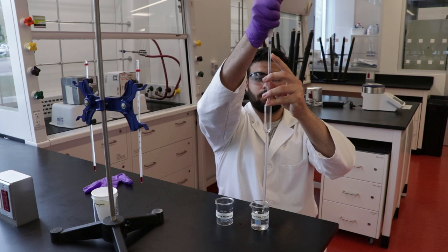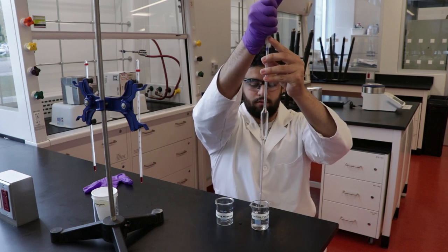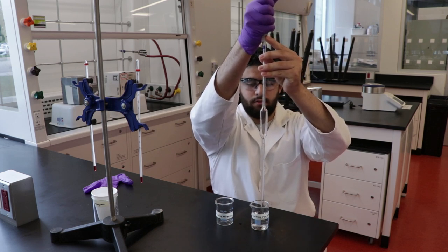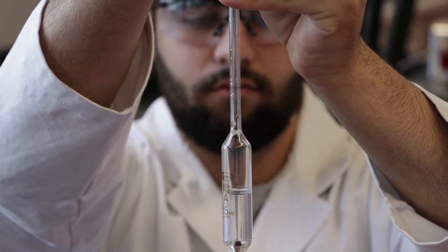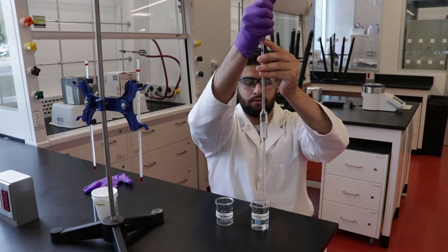Using a 25 mL pipette, carefully measure 50 mL of the limiting reagent into a 100 mL beaker. Follow the link in the description below for a more detailed video on pipetting.